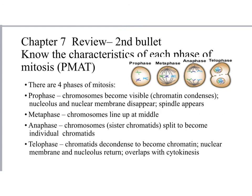Next, know the characteristics of mitosis — PMAT: prophase, metaphase, anaphase, and telophase. Interphase is not mitosis. In prophase, chromosomes become visible as chromatin condenses; the nucleolus and nuclear membrane disappear; spindle fibers appear; and centrioles move toward opposite poles. In metaphase, chromosomes line up at the middle and spindle fibers attach through the centromere. In anaphase, sister chromatids split and move toward the poles as spindle fibers shorten. In telophase, chromatids decondense back to chromatin, the nuclear membrane and nucleolus return, and telophase overlaps with cytokinesis.